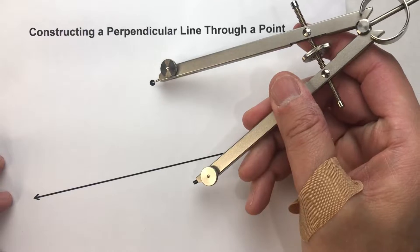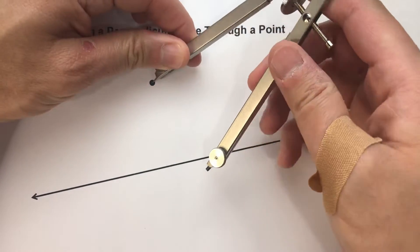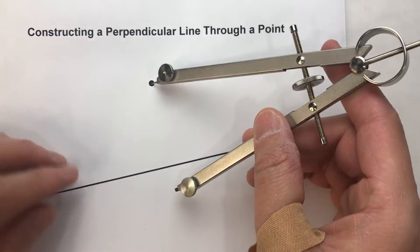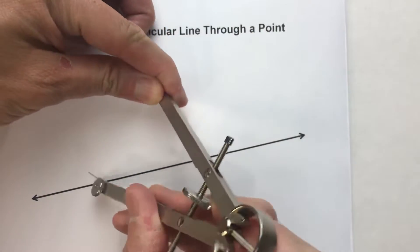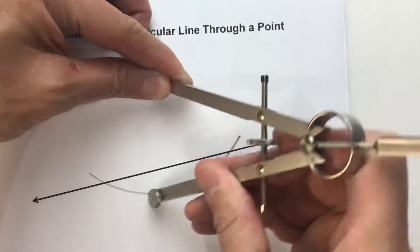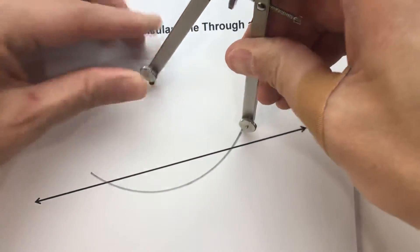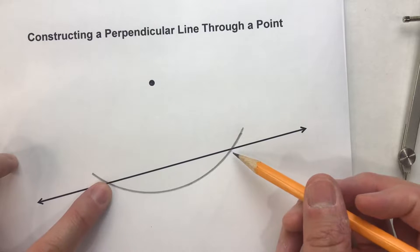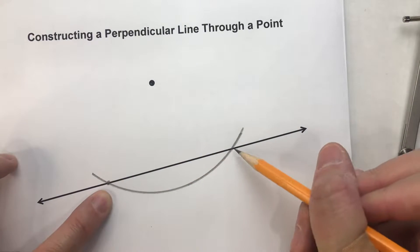So here's what we're going to do. We are going to take our compass and set it so that it's farther than the distance from the point to the line. And we are going to swing an arc so it hits the line in two places. Now, see where that arc hits that line here and here?